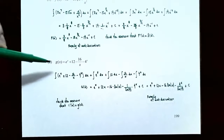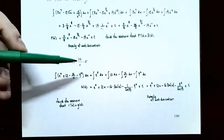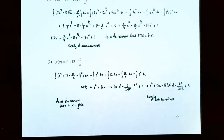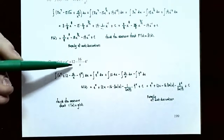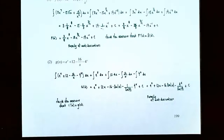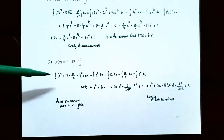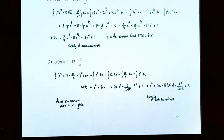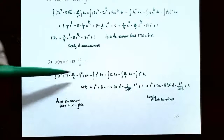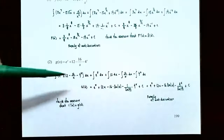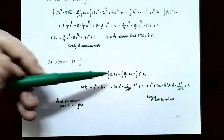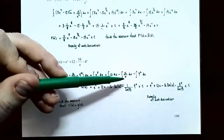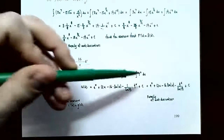Number two: g(x) = e^x + 12 − 16/x − 4^x. We have different types of functions: an exponential e^x, a constant 12, a rational function 16/x, and another exponential 4^x. Using the sum and difference rule, we write the indefinite integral as: integral of e^x dx, plus integral of 12 dx, minus integral of 16/x dx, minus integral of 4^x dx.